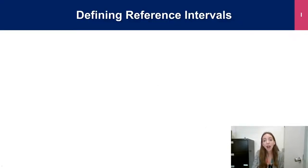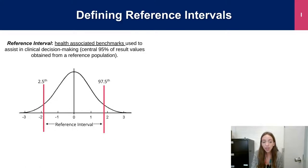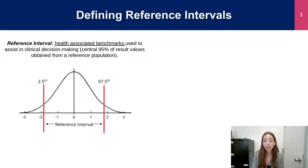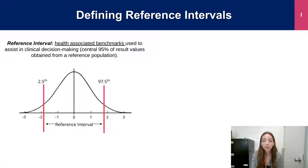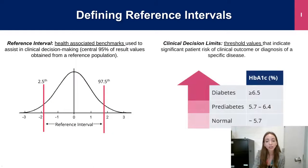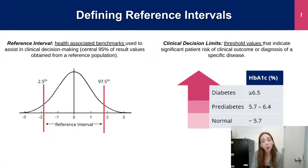In pediatrics and in adolescents and adults, there are various ways to interpret a blood test. Firstly, we have reference intervals, which can be defined as health-associated benchmarks used to assist in clinical decision-making. They are typically represented by the 2.5th and 97.5th percentiles in a healthy reference distribution, as per CLSI or Clinical Laboratory Standard Institute guidelines, as well as other governing bodies. In contrast, we also have clinical decision limits, which serve as threshold values where flagging below or above this value may indicate at-risk of significant disease or be specific for diagnostic criteria of disease.